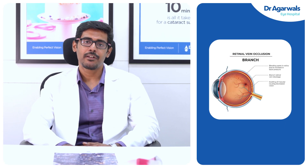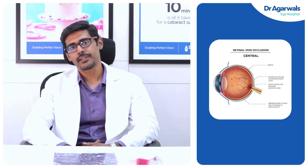Visual loss can be permanent. In hypertensive retinopathy, both arteries and veins can get occluded. If a vein gets occluded, it can be either a branch retinal vein occlusion or a central retinal vein occlusion. In branch retinal vein occlusion, only a part of the retina will be affected, whereas central retinal vein occlusion means the entire retina tends to get affected.